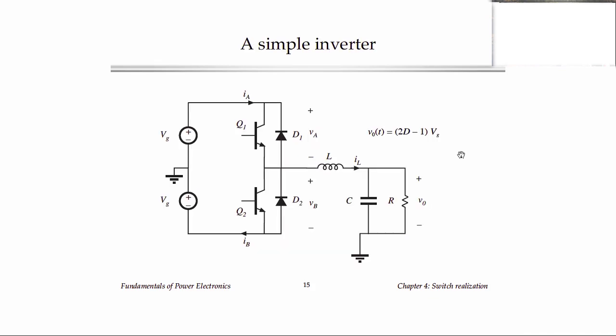Here's an example of a two-quadrant switch application. So this is a simple inverter. We have split DC input voltage. So we have plus VG coming into our converter here, this is ground or zero volts, and we have minus VG there. And net, this is a DC input to the converter. And then we have a load, and we want to produce AC across this load, and this node here is connected to this ground.